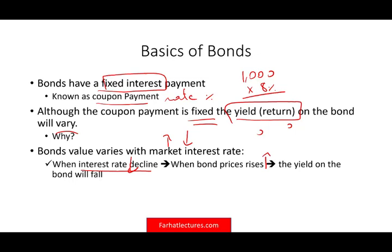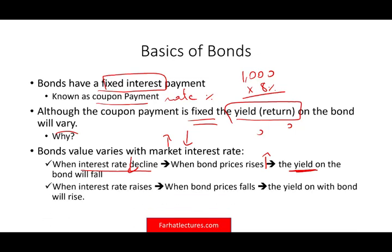Why do bond prices go up when rates fall? Because if you hold the bond and the overall interest rate went down, your bond is more valuable relative to the current interest rate. If your bond went up in value, your yield — your return — will fall. Conversely, if the interest rate rises, your bond will fall in value because you have a bond that's relatively lower than the market.